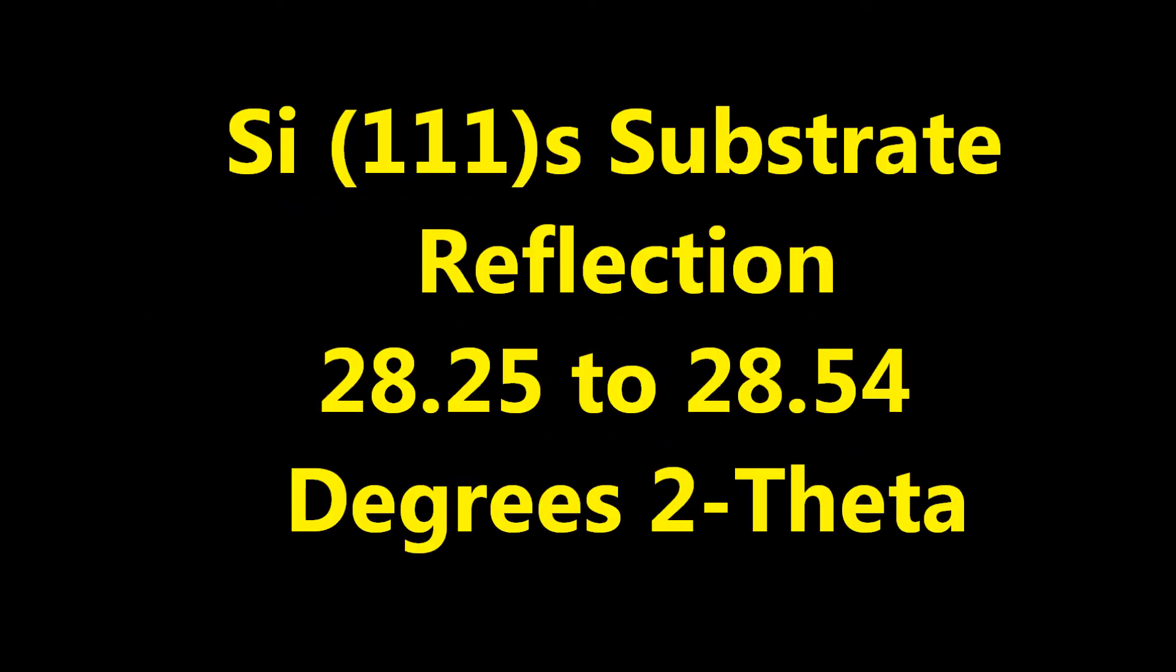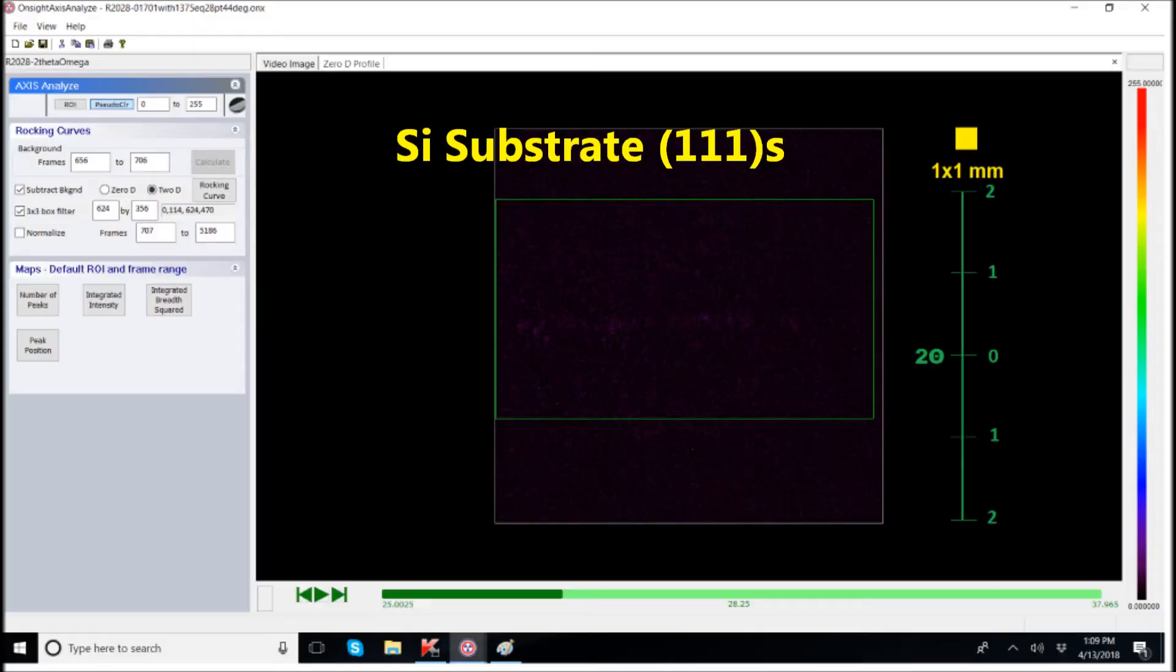The silicon substrate 1-1-1 symmetric reflection shows high intensity and low rocking curve half-width.